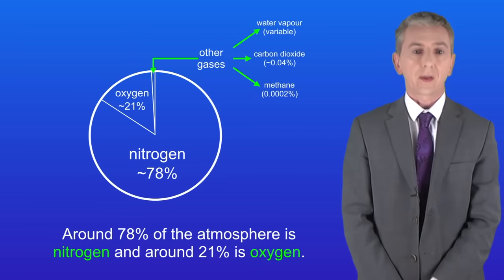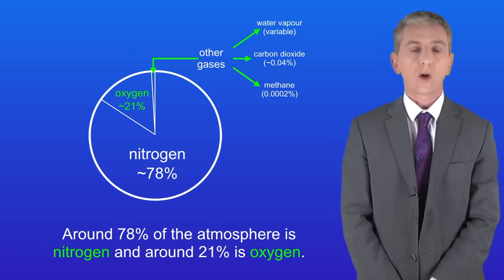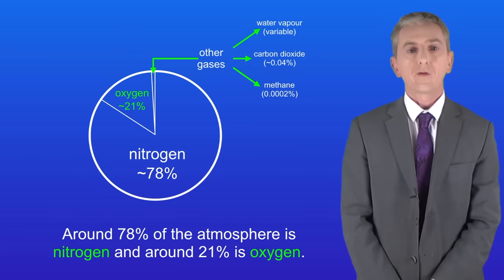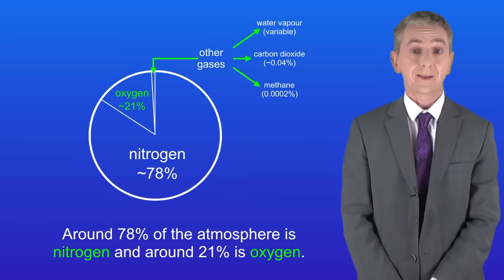In the last video we saw that the atmosphere contains two main gases. Around 78% is nitrogen and around 21% is oxygen. The remaining 1% consists of many different gases.